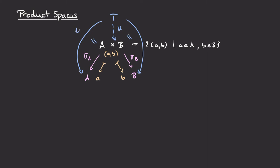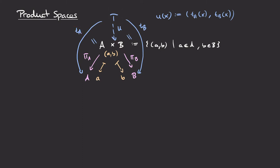If we call the map from T to A t_A and the map from T to B t_B, then u of some element x in T is defined as the tuple whose first element is t_A(x) and whose second element is t_B(x). Since t_A maps into A and t_B maps into B, this tuple is indeed an element of the Cartesian product A×B. So for any set T with maps t_A and t_B, we can construct such a map u.